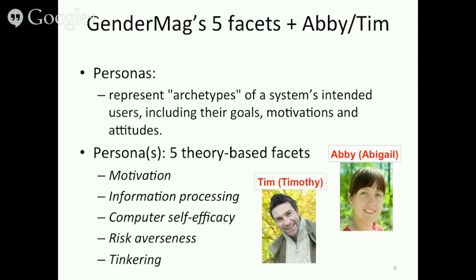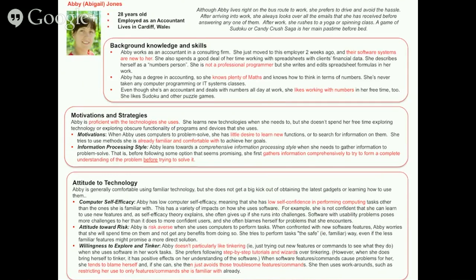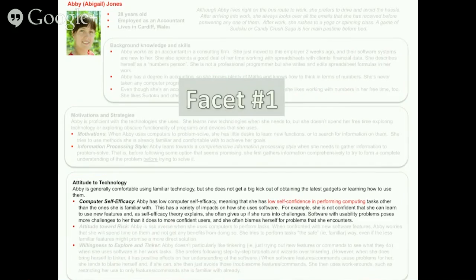So far we've created two personas, one male and one female named Abby and Tim. We focus on five theory-based facets in which gender differences have been statistically shown, and we show the statistical position of these populations — the male statistical body of work in Tim and the female in Abby. I'm going to let Abby introduce these facets to you. This is the entire persona of Abby, and we're going to let Abby introduce you to these facets one at a time.